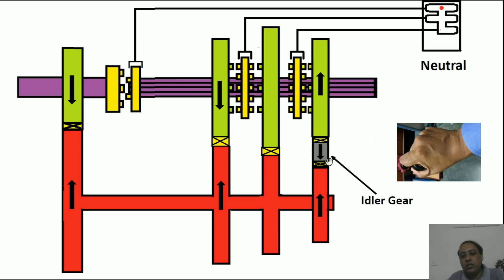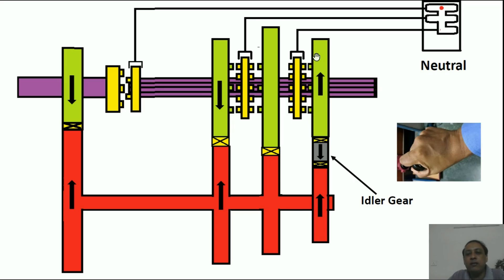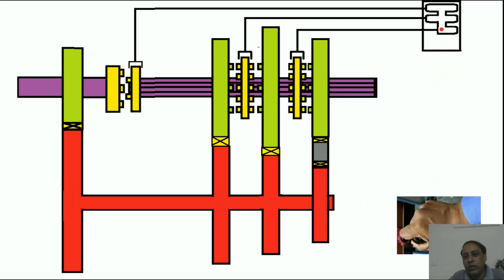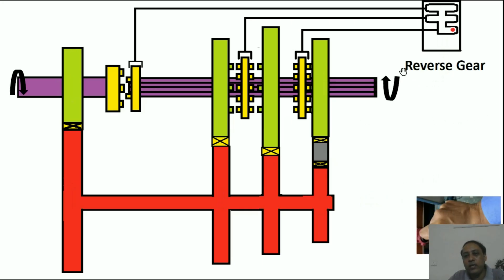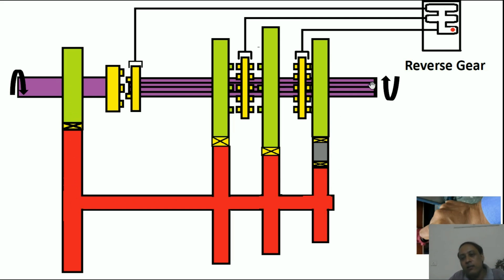Now for reverse gear, one additional idler gear is used in between. If the driver gear spins in one direction, the idler gear will spin in the opposite direction. That idler gear then drives the driven gear, which will again spin in the opposite direction compared to the idler gear. To shift into reverse, we move the selector downward and then engage toward the right. Power flows from the engine to the layshaft, then to the last driver gear, then to the idler gear, then to the driven gear, to the dog clutch, and finally to the splined shaft.